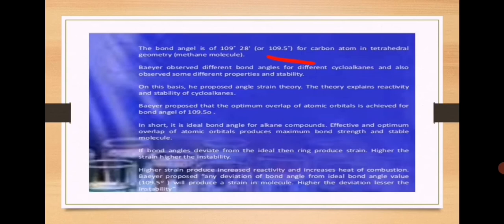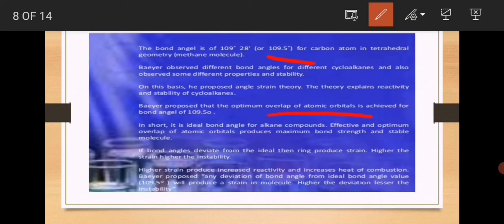Baeyer proposed that the optimum overlap of atomic orbitals is achieved at a bond angle of 109.5 degrees. If the overlap is maximum and optimum, bonding is strongest at 109.5 degrees. If a compound or alkane deviates from this angle, the stability will not be optimum. In short, 109.5 degrees is the ideal bond angle for alkane compounds. An effective and optimum overlap of atomic orbitals produces maximum bond strength and a stable molecule. If bond angles deviate from the ideal, the ring produces strain — higher the strain, higher the instability.